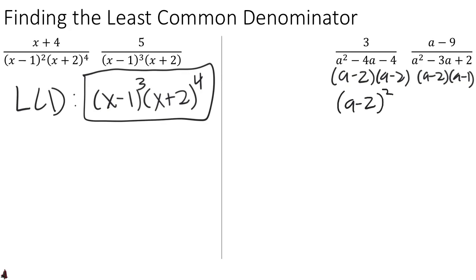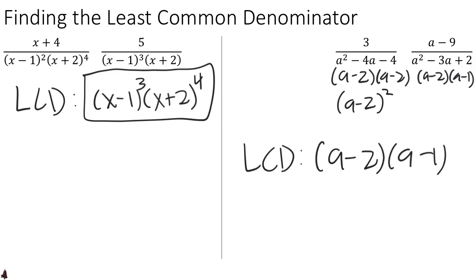Now that everything is factored, we can put together the common denominator. Our LCD is going to be composed of (a minus 2)'s and an (a minus 1). For the (a minus 2)'s, we have 2 in one fraction and 1 in another, so we need 2. For the (a minus 1), there is only one in the whole problem, so we only need 1. That is our LCD: (a minus 2) squared times (a minus 1).